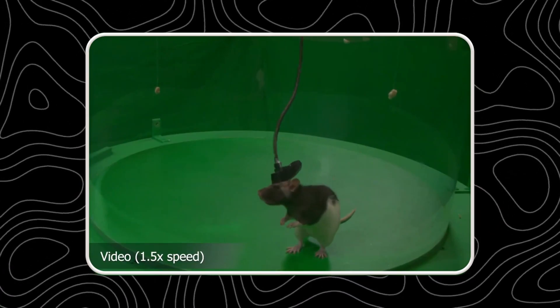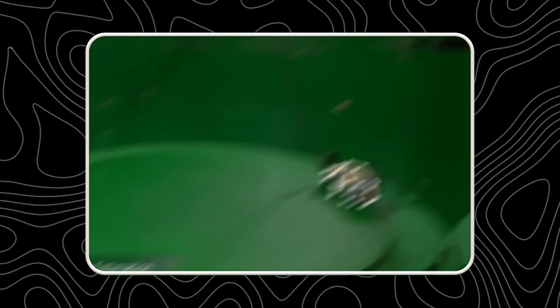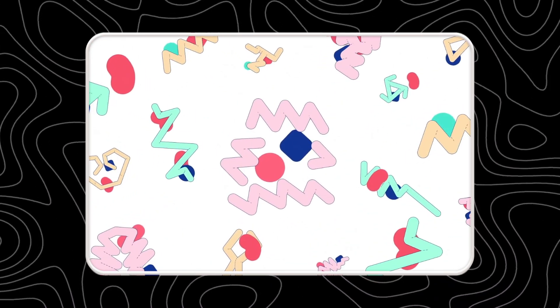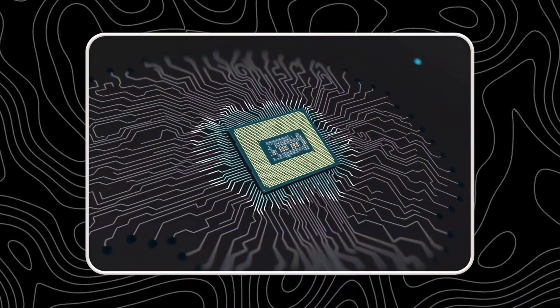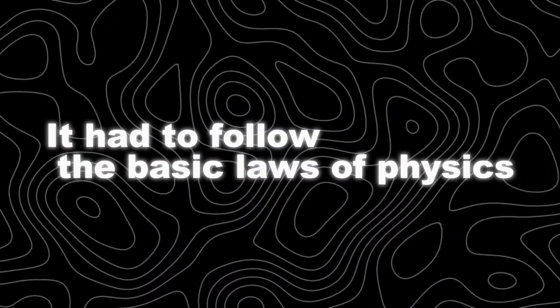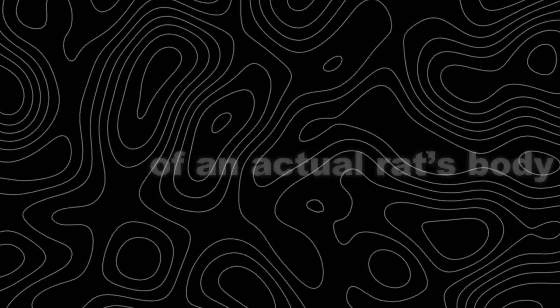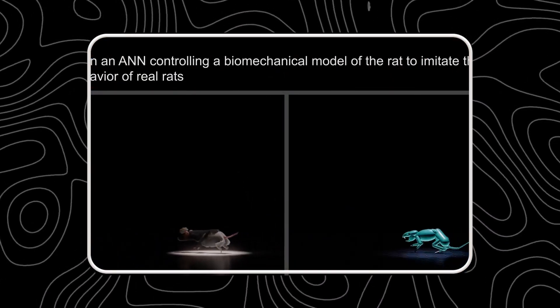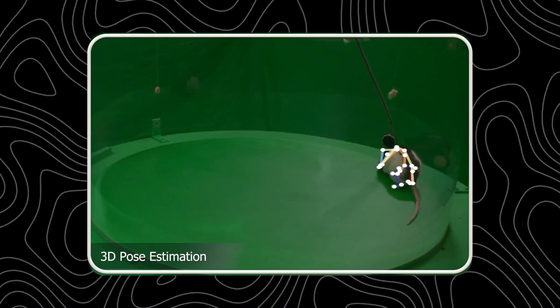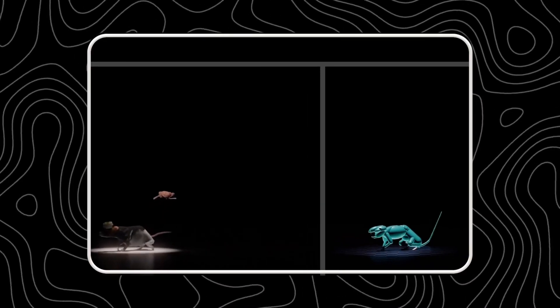They started by creating an accurate biomechanical model of a rat's body using a sophisticated physics simulator called Mujoco. This virtual rat was created to imitate the physical constraints and mechanics of a real rodent. To construct this model, the researchers used an extensive dataset of high-resolution motion data recorded from real rats. These recordings captured the rats performing a wide range of natural behaviors and movements.